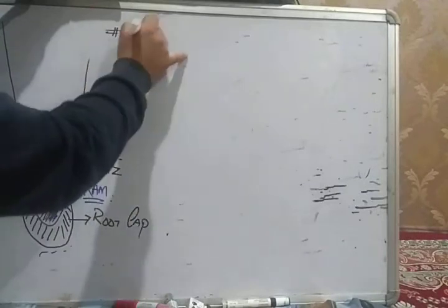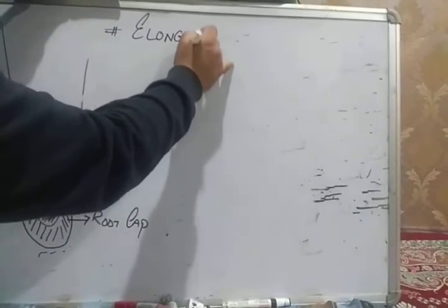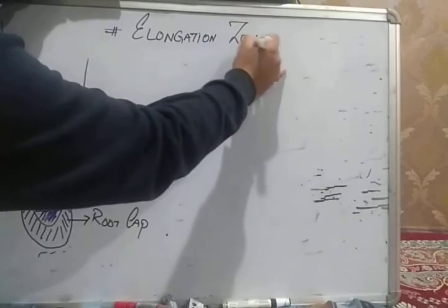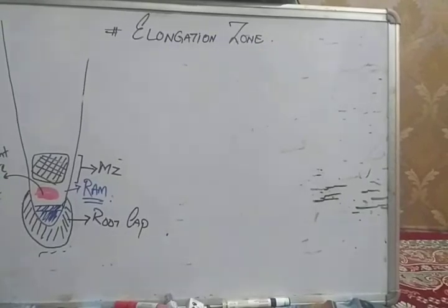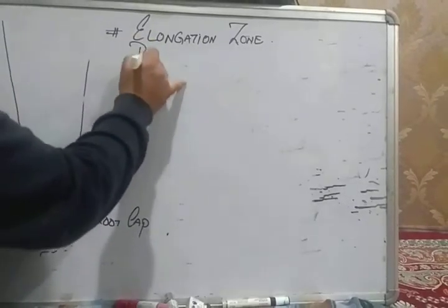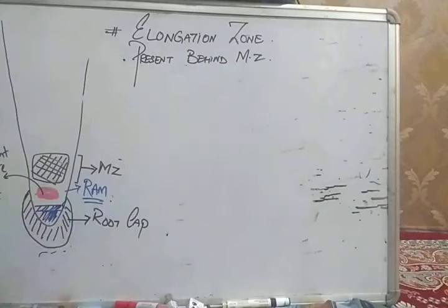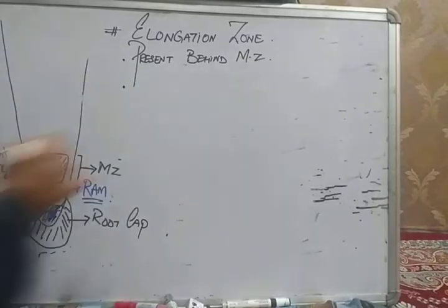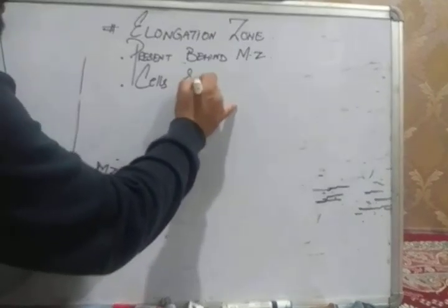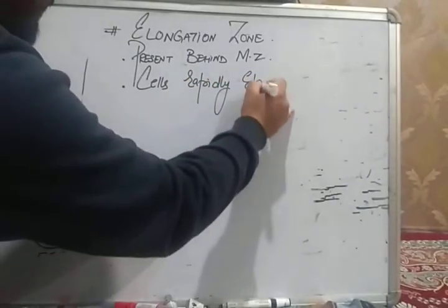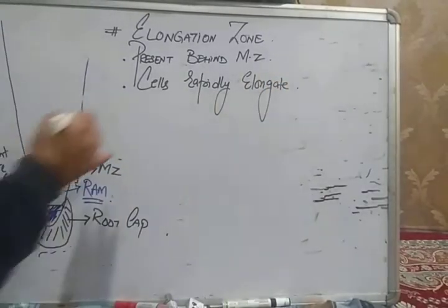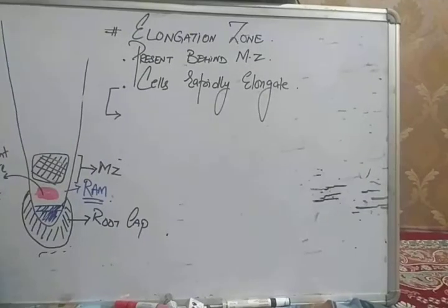Meristematic zone is followed by another zone - that is called the elongation zone. Meristematic zone ke peeche ek region of cells hai that is called elongation zone. In this elongation zone, cells of this region rapidly elongate.